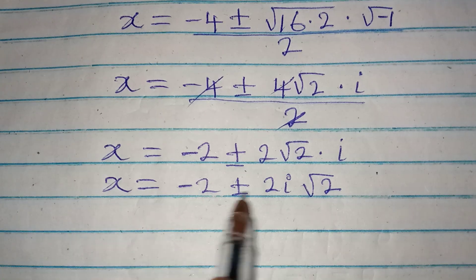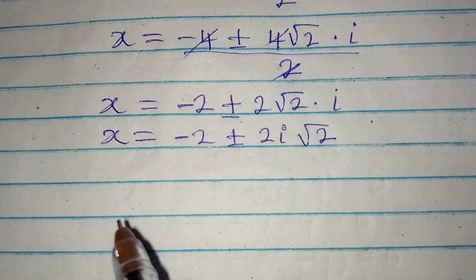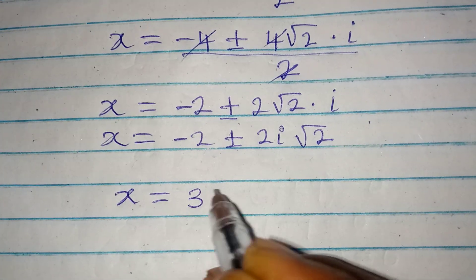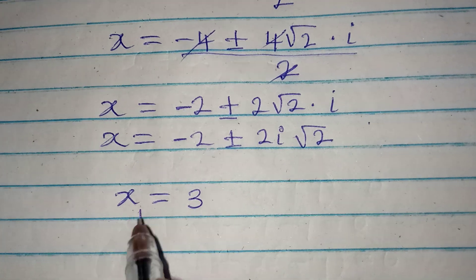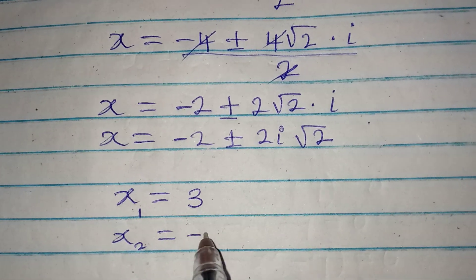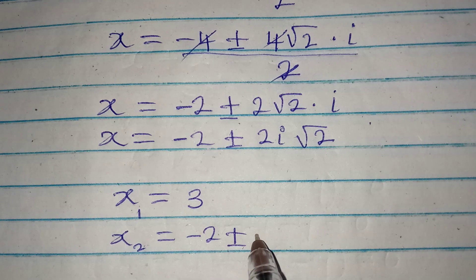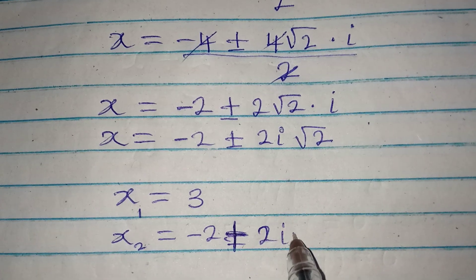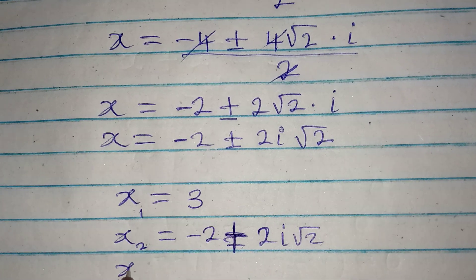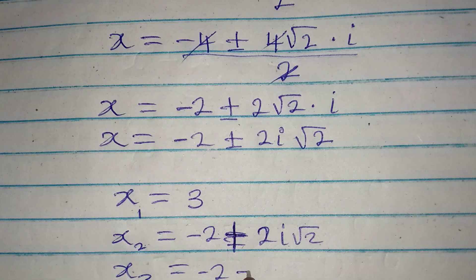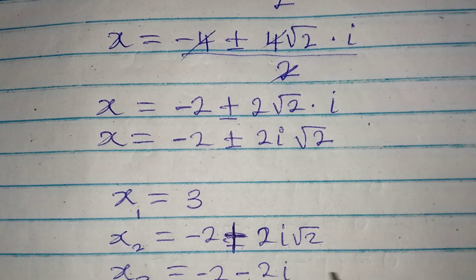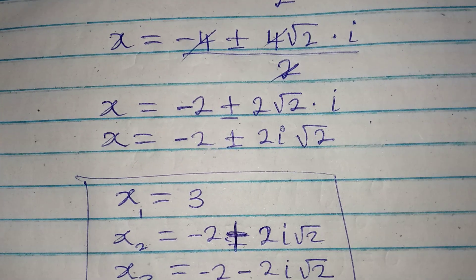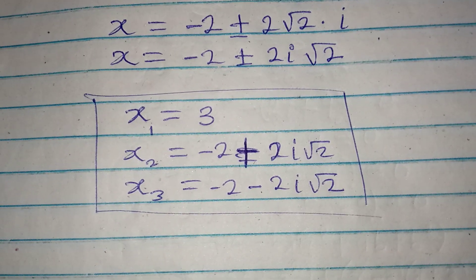Bringing the three solutions together: x₁ equals 3 as our first solution. x₂ equals negative 2 plus 2i square root of 2. x₃ equals negative 2 minus 2i square root of 2. So we have three values of x in total.